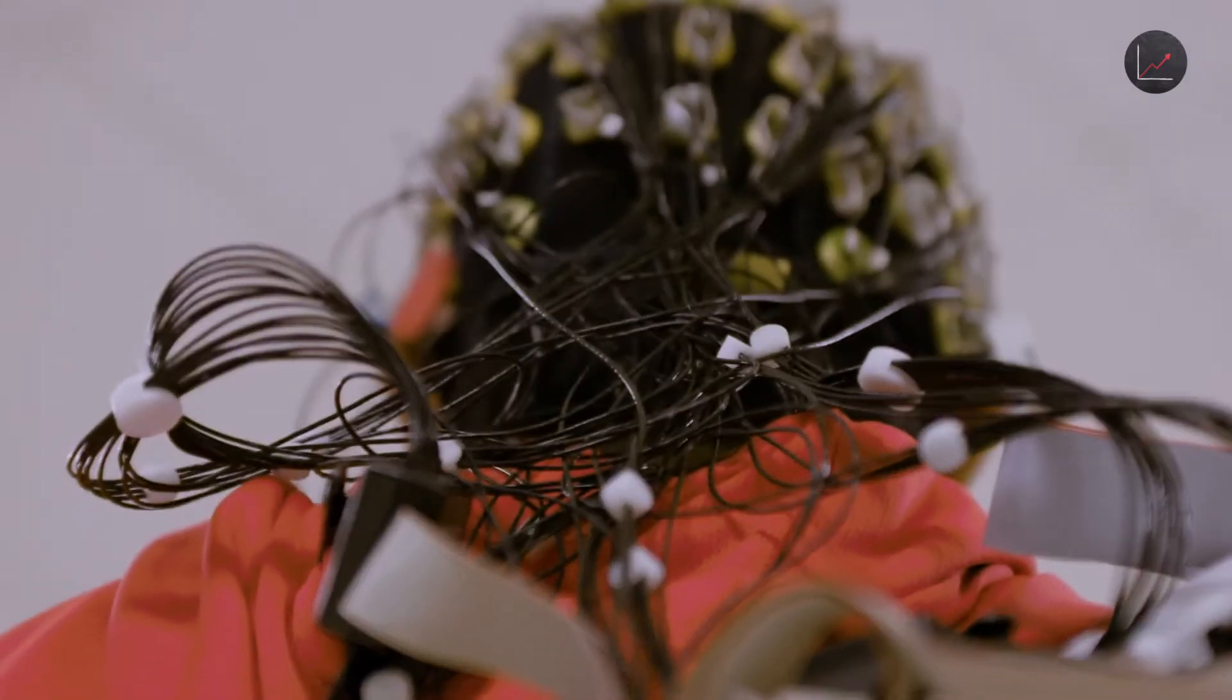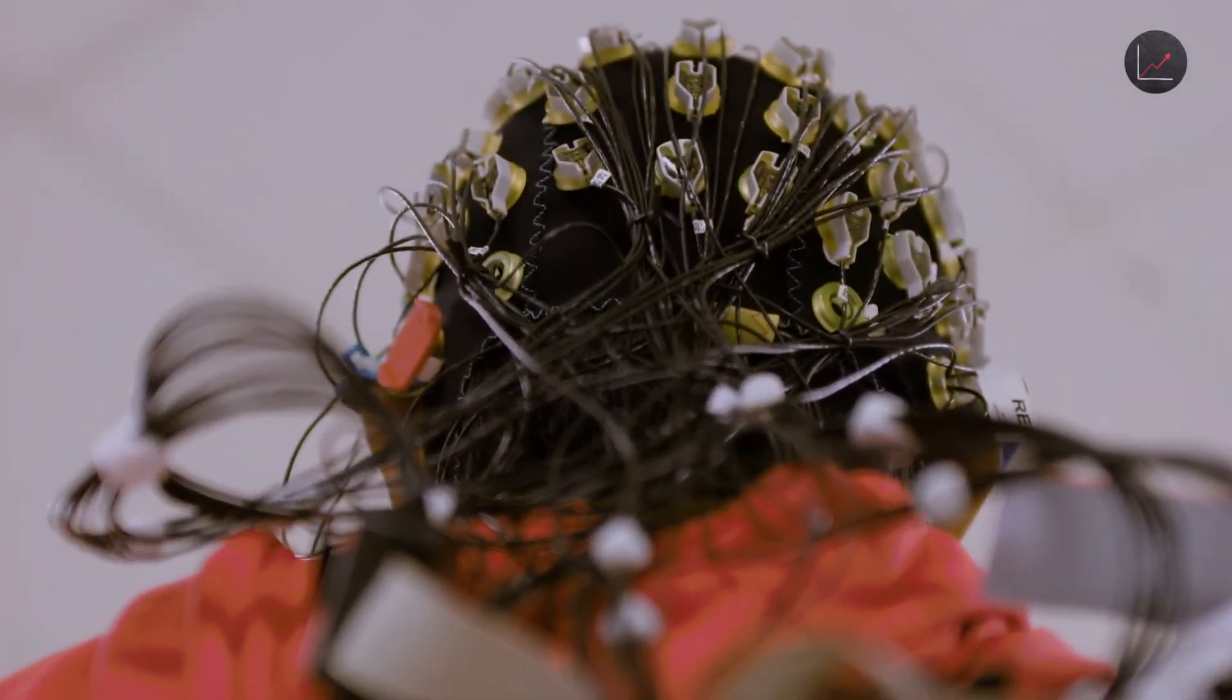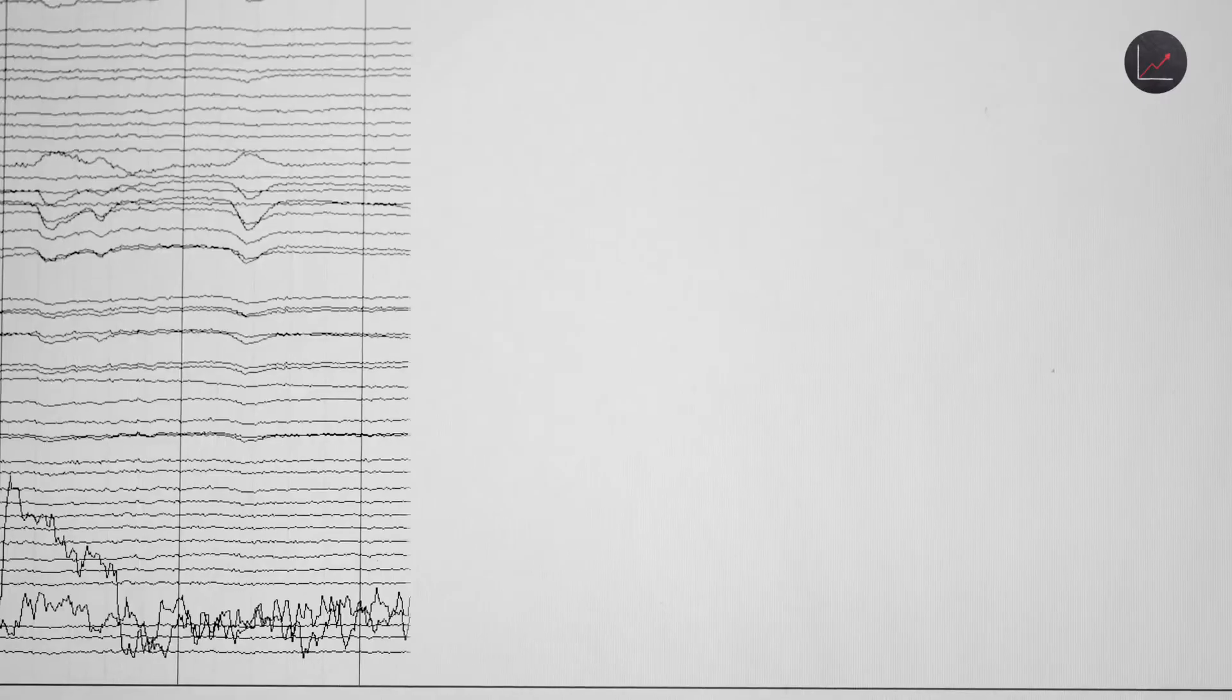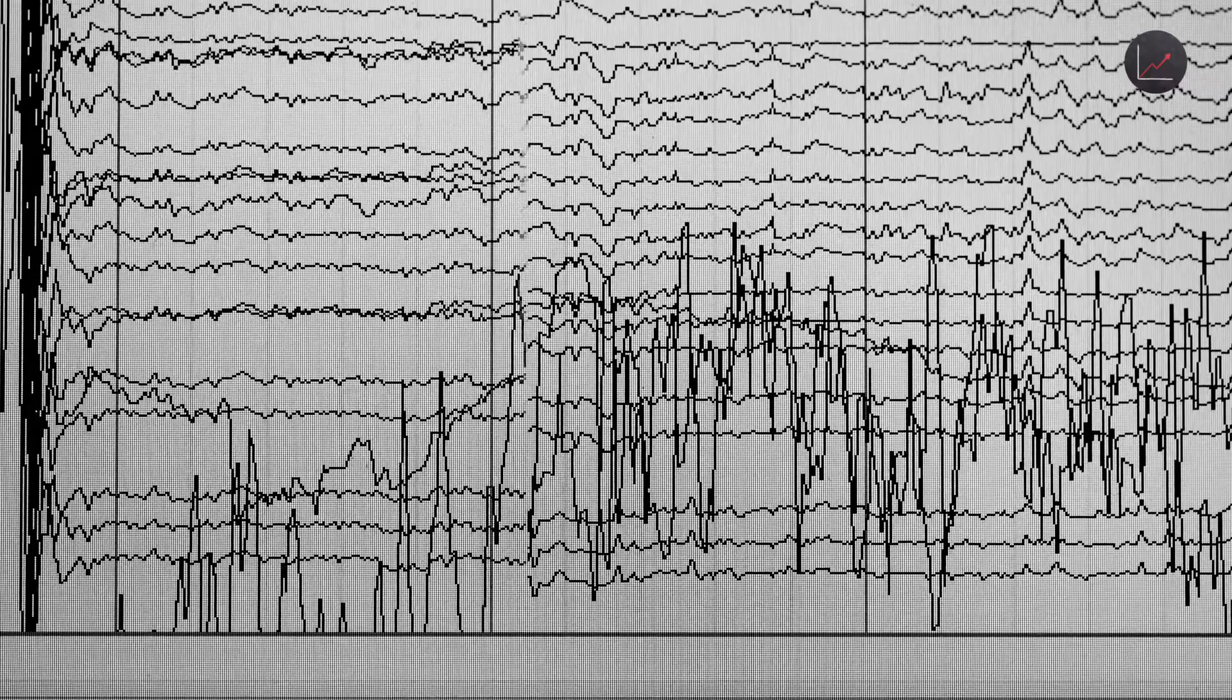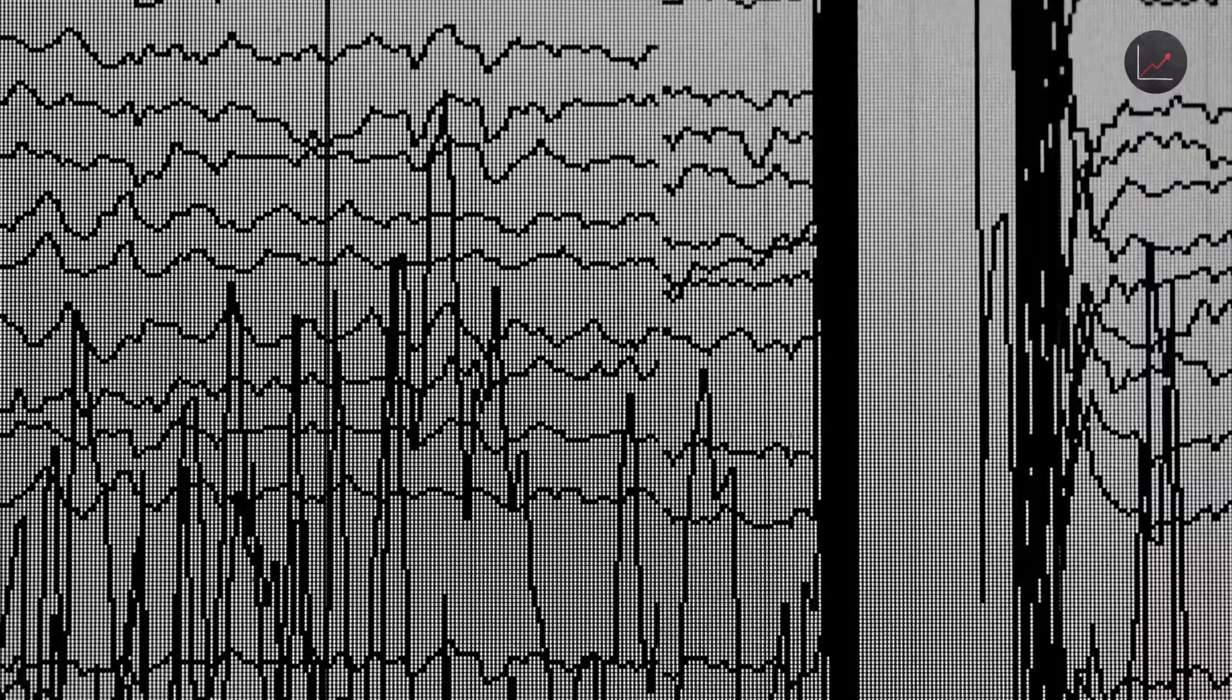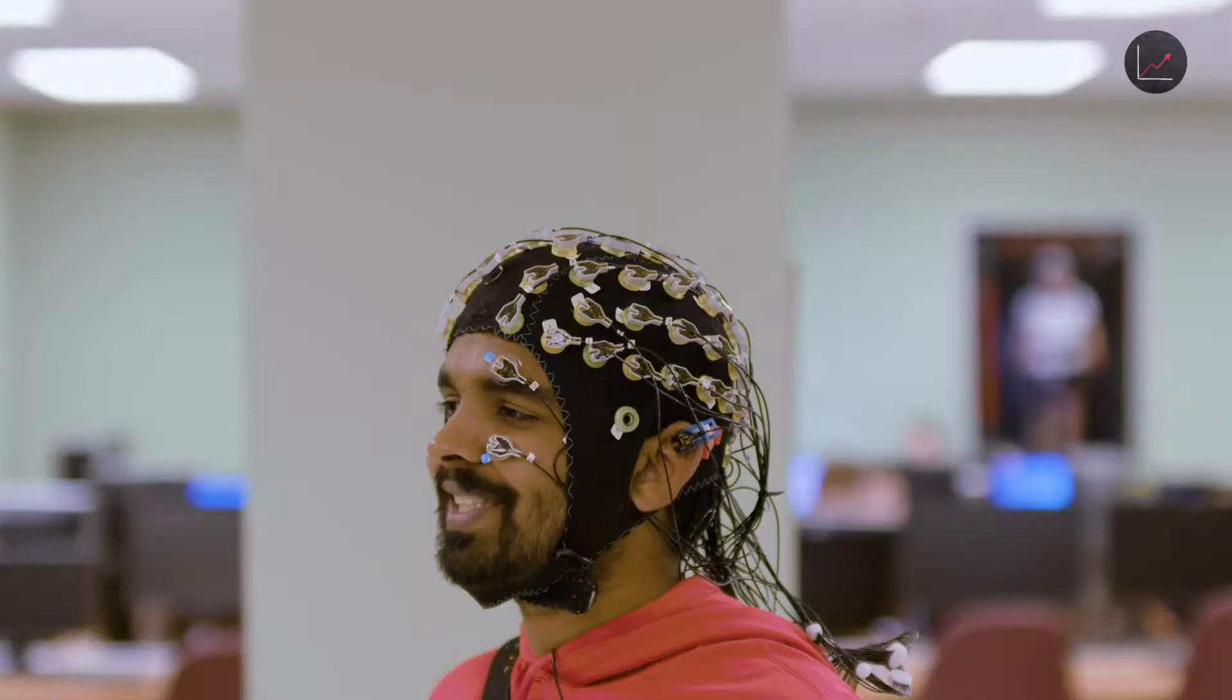BCIs can record the activity of the brain, the firing of individual neurons. Obviously, if you take information out of the brain, you can in principle decode what that means. And just like there was a transition in technology from the PC to the smartphones, it is possible, I would say likely, that the next transition will be from a device that you have in your pocket to a device that you have in your head.